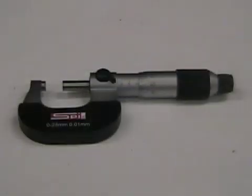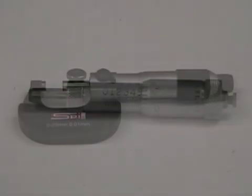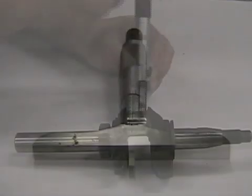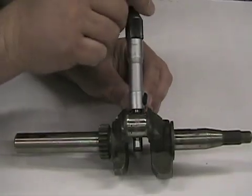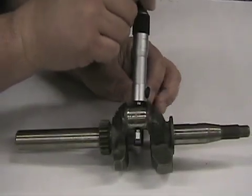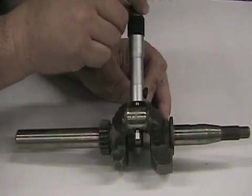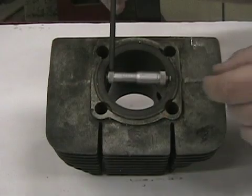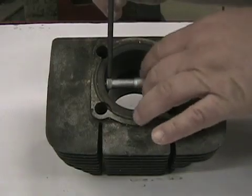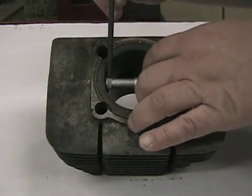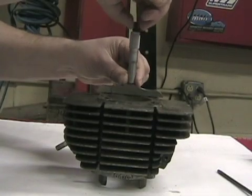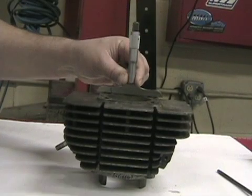They are the outside micrometer, the inside micrometer, and the depth micrometer. The outside micrometer is used to measure outside diameters. These types of micrometers can be used to measure pistons, crankshafts, or camshafts. The inside micrometers can be used to measure inside diameters, such as cylinder bores. The depth micrometer is used to measure depths. Mechanics may use these to measure the depths of holes.